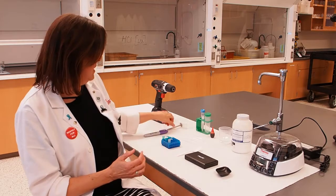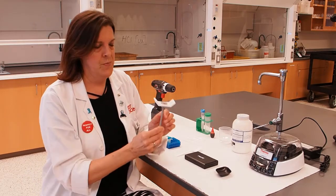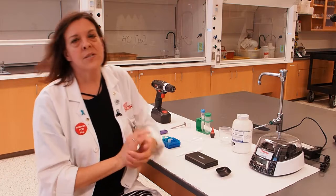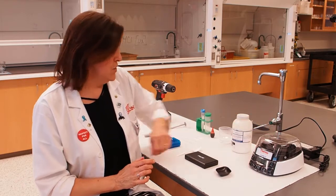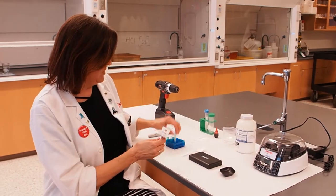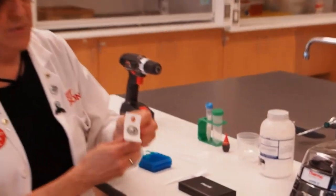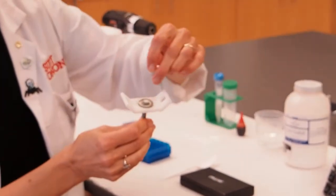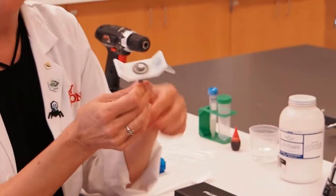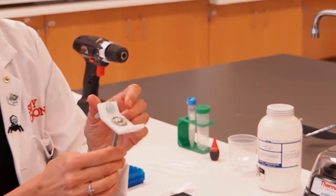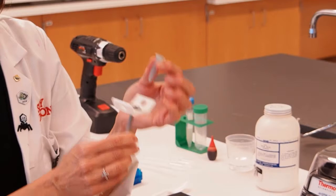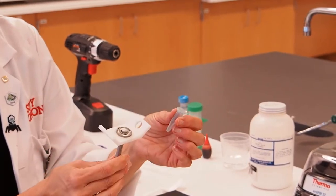We're going to be assembling a centrifuge out of a drill and this little adapter right here. To explain how centrifugation works, you would put your sample into the thing that's going to hold it. What the centrifuge does is it spins that sample around. So the sample is subjected to what we call centrifugal force.